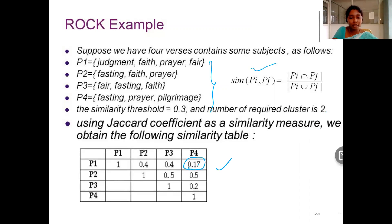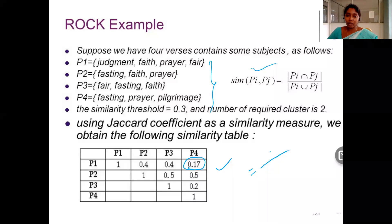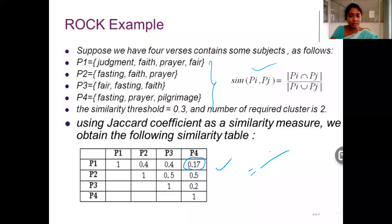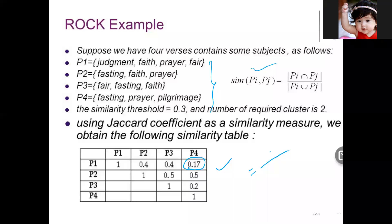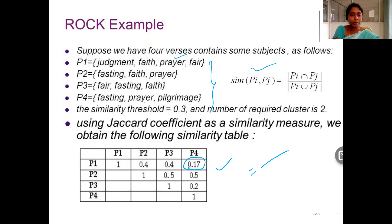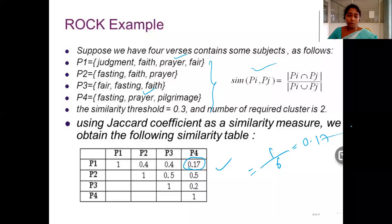Let's check how to get a value — for example, the similarity between P1 and P4. What is the numerator value and what is the denominator value? There are two common elements between P1 and P4, with one being the common name. So it's one out of six, excluding the repeated element. One divided by six gives approximately 0.17.